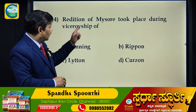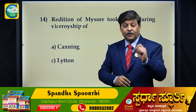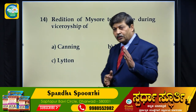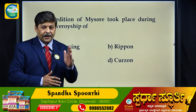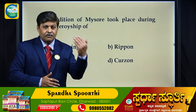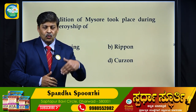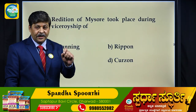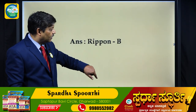The Rendition of Mysore took place under which Viceroy? The Rendition of Mysore was in 1881, when the Mysore kingdom was returned back to the rulers by the British. At that time, the Viceroy was Ripon. So Viceroy Ripon is the answer.